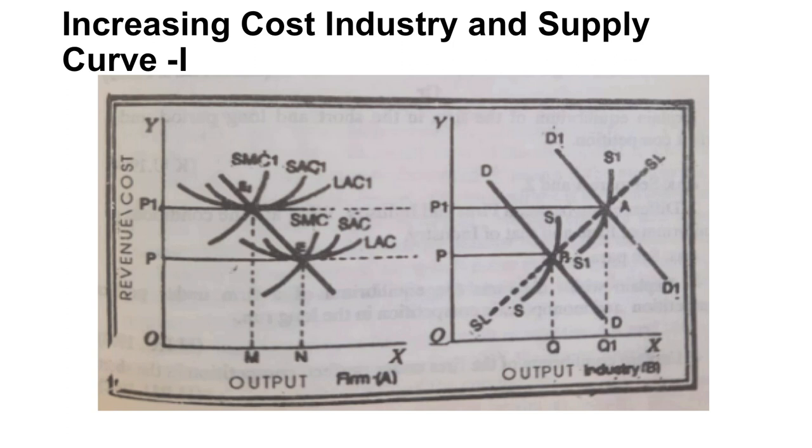So with the help of this session, I hope all learners will understand the supply curve of a firm and industry, explain the supply curve in the short run and long run, and analyze the supply curve in three conditions: constant cost industry, decreasing cost industry, and increasing cost industry. Thank you.